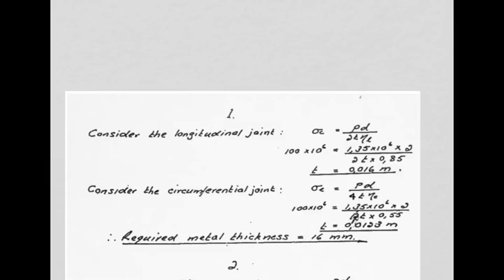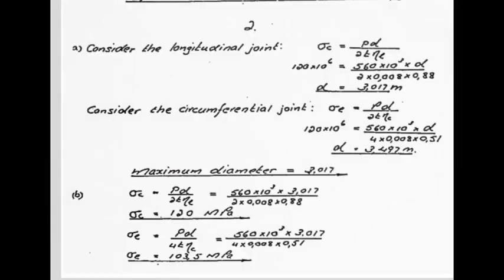Here are the tutorial problems — stop the video and attempt all four. Be careful not to confuse circumferential and longitudinal joints. In problem two you solve for the vessel diameter and find two values: 3.017 meters and a larger one. You must take the lesser, because a larger diameter means a larger projected area, greater force, and greater stress.